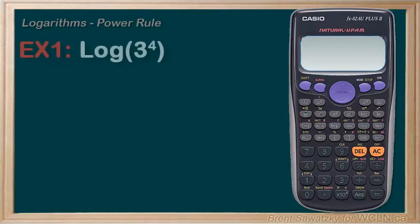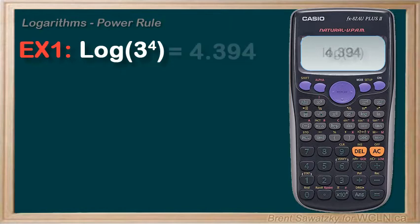Example one, log of three to the power of four. Now we could enter it directly into our calculator as exactly this, log of three to the power of four, and we'd get 4.394 rounded.